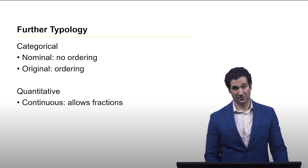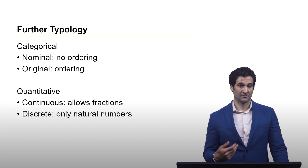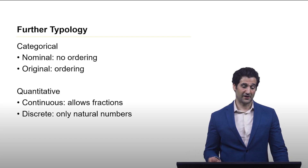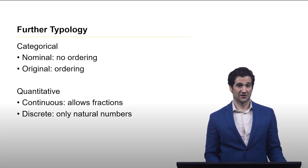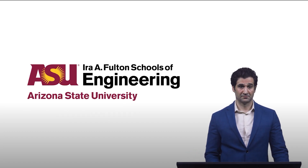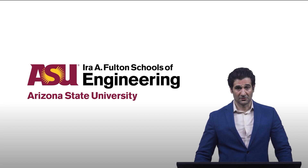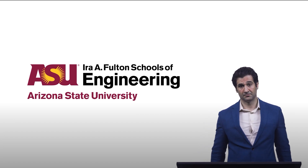With quantitative data, the obvious two subtypes are continuous and discrete. With continuous, you allow for fractions and decimals. With discrete, it's only the natural numbers. This concludes our lecture on data. Please stay tuned.